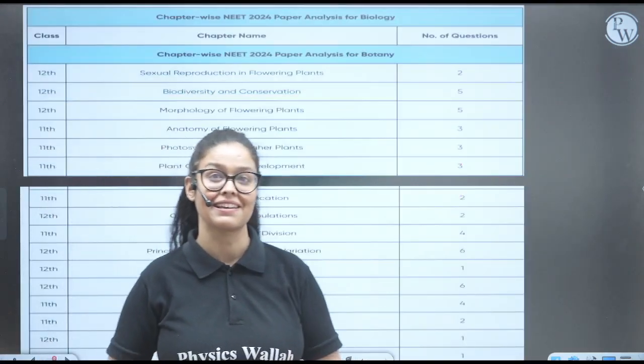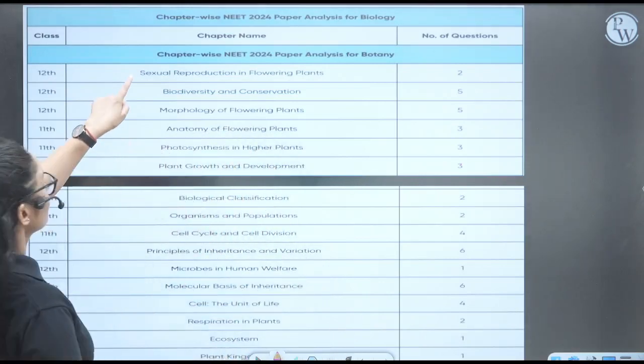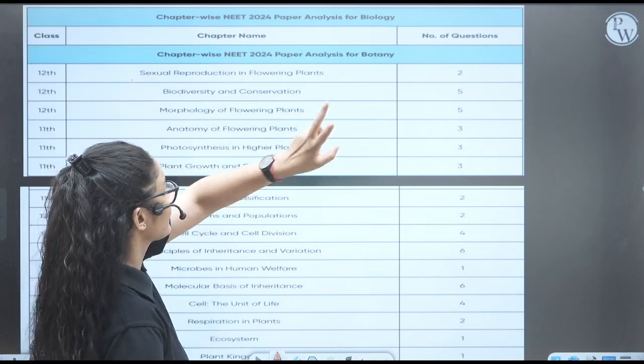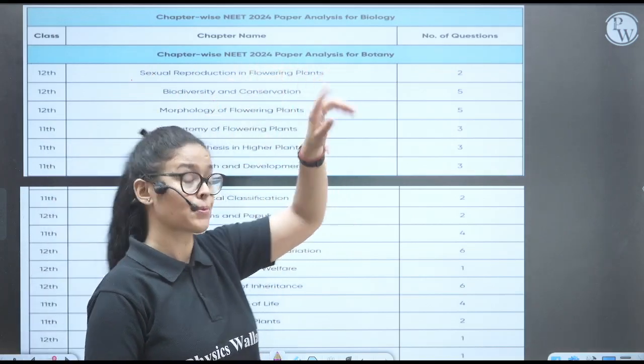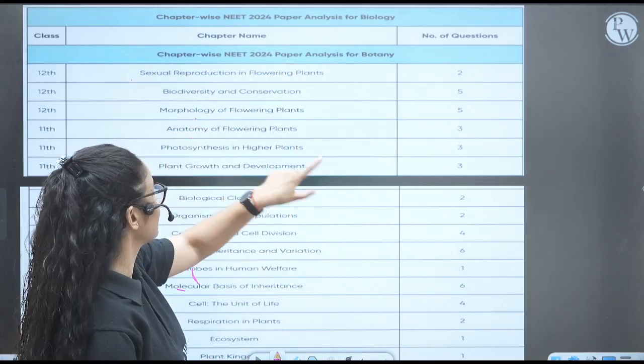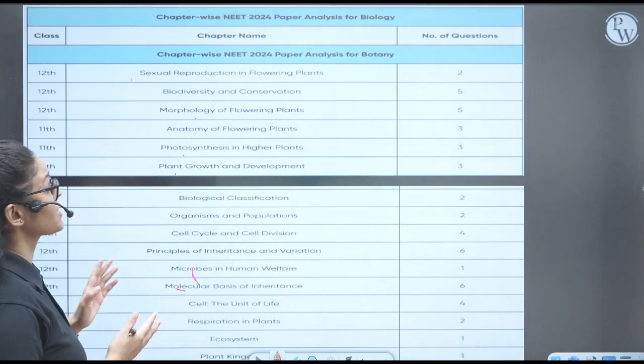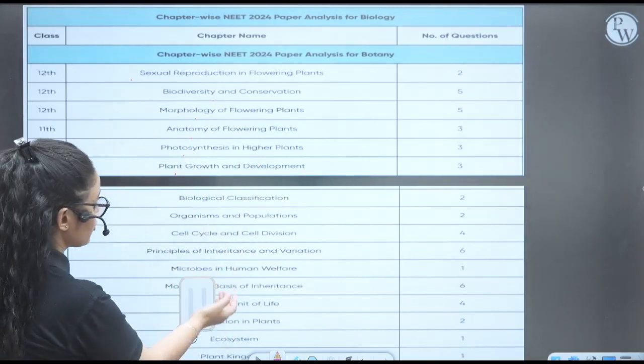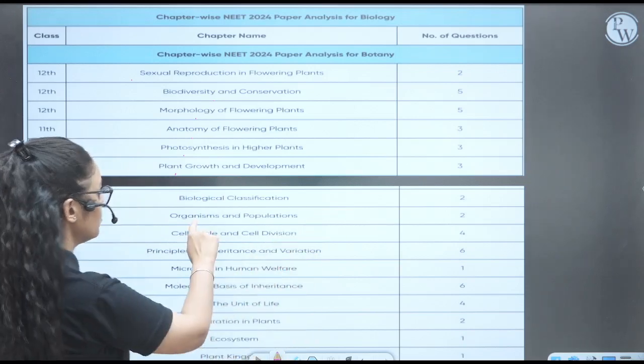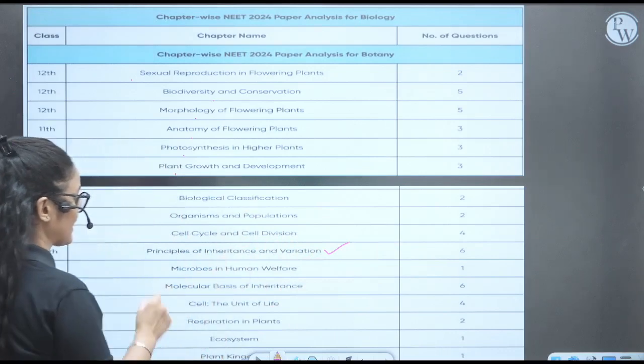Now let me take you ahead. Let's see the chapter-wise analysis of the questions in biology first. So first chapter is sexual reproduction in flowering plants - they have asked two questions. Biodiversity and conservation - five. This chapter was so important. Morphology - five. Anatomy - three. Photosynthesis - three. Growth and development - three. Many questions from the plant physiology itself. Biological classification, so it is the botany part, right? Two. Organism and population - two. Cell cycle and cell division - four.